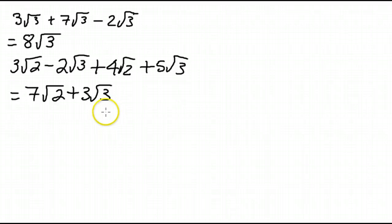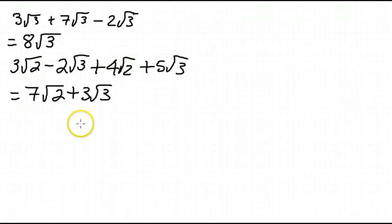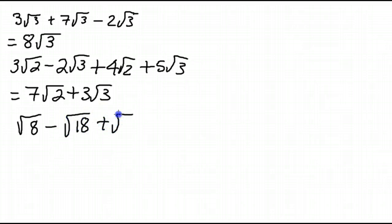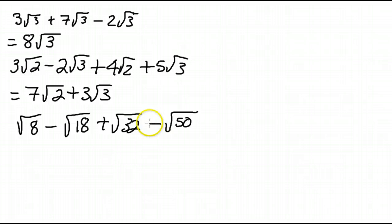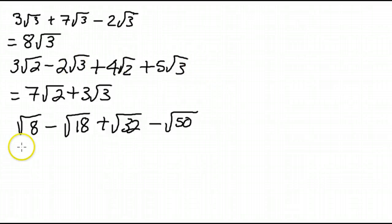This is the final form of our answer. Things step up a little in difficulty. Let's say we have to do something like root 8 minus root 18 plus root 32 minus root 50. At this point you might say these are all unlike radicals — I've got a root 8, a root 18, root 32, root 50. I don't have 2's or 3's under the root sign. But wait — one of the things we do is we have to simplify these radicals.